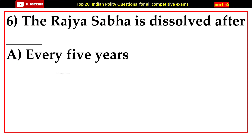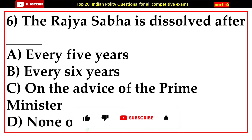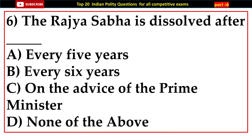Question number six: The Rajya Sabha is dissolved after — options: A) Every five years, B) Every six years, C) On the advice of the Prime Minister, D) None of the above. Answer: D) None of the above.